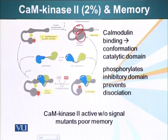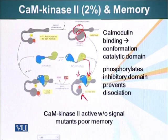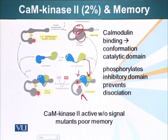The catalytic domain, as the name suggests, attaches a phosphate group to the target proteins. When calmodulin becomes activated, it binds 4 calcium ions and subsequently binds cam kinase 2. When it binds cam kinase 2, cam kinase 2 undergoes a conformational change — it releases the inhibitory domain and releases the catalytic domain. Once the catalytic domain is activated, the first thing it does is phosphorylate the inhibitory domain. When this phosphate group is attached to the inhibitory domain, the inhibitory domain cannot inhibit the function of the catalytic domain, even if calmodulin has been released or is no longer in active form.